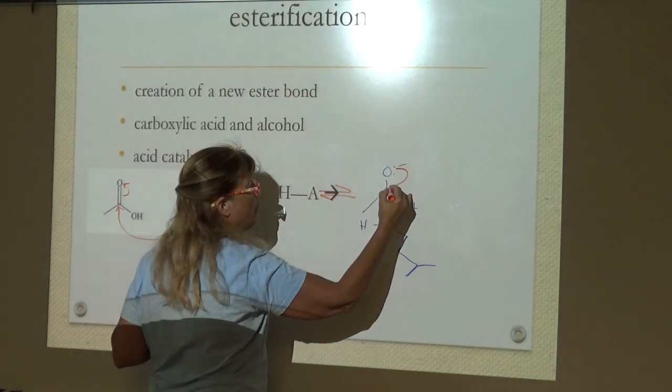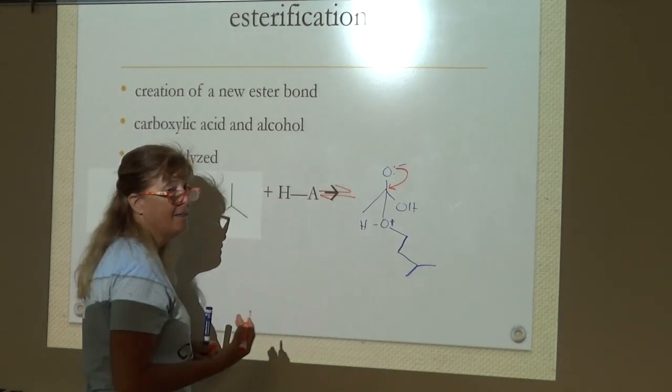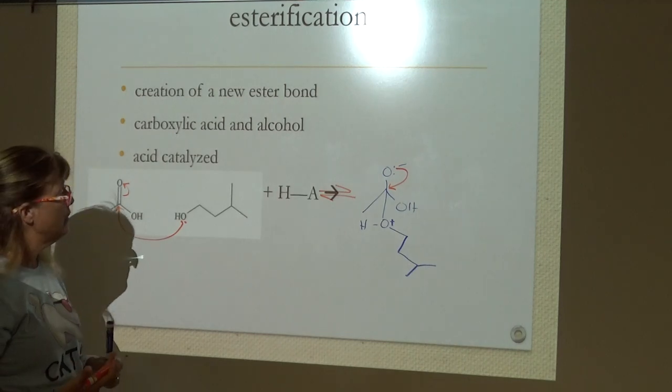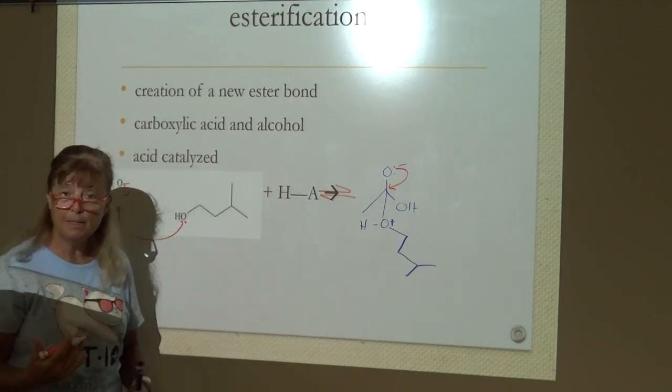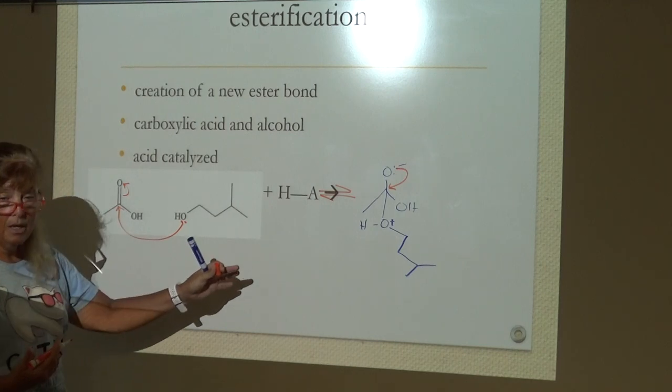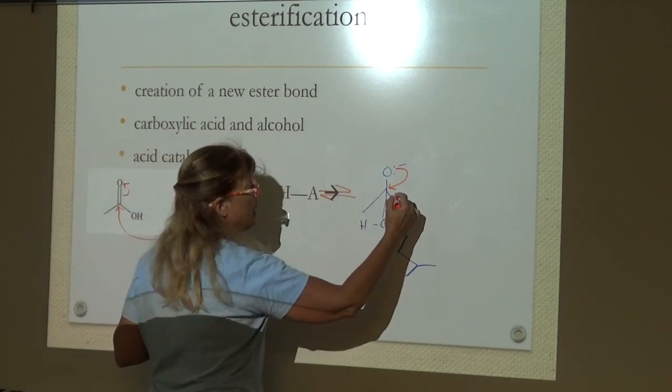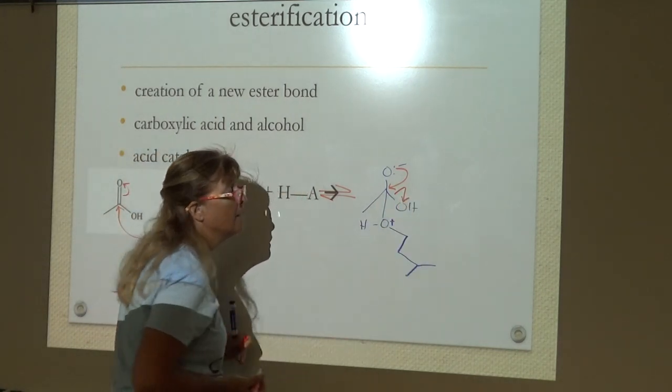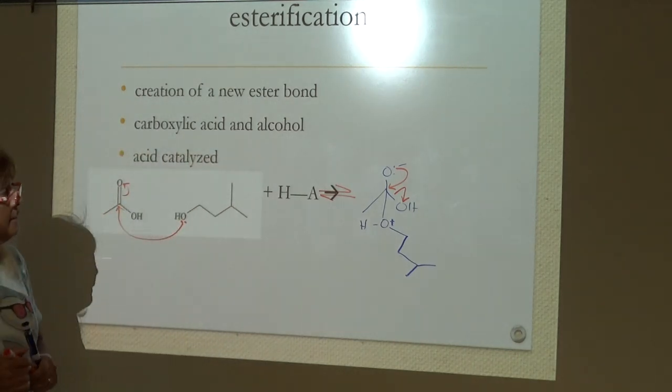We're going to take these electrons, bring them right back down. Here again, that carbon's going to have to let go of something. If it's the bond to the positively charged oxygen, we're right back where we started in equilibrium. But eventually, it's the hydroxy that goes.